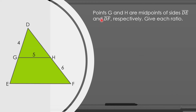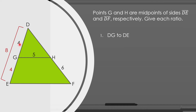So let us have more examples for ratio. Points G and H are midpoints of sides DE and DF respectively. Find the ratio of DG to DE. Since G is the midpoint of side DE, the measure of DG is equal to the measure of GE. If DG is equal to 4, then GE is equal to 4 as well, making DE equal to 8. Therefore, the ratio of DG to DE is equal to 4 is to 8, or 1 is to 2.